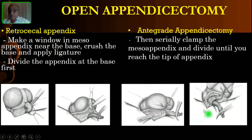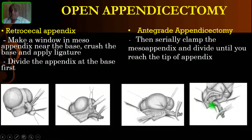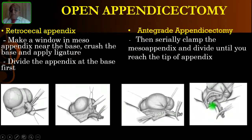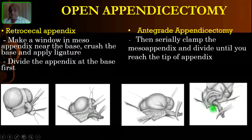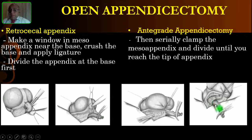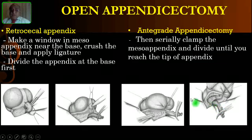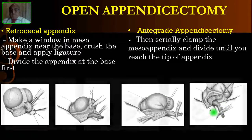You can then divide the peritoneum under vision and go up to the tip of the appendix. Sometimes if the tip goes very high — even up to the sub-hepatic region — you are likely to injure two structures. You have to beware of injuring the duodenum or the right ureter. These injuries must be avoided.